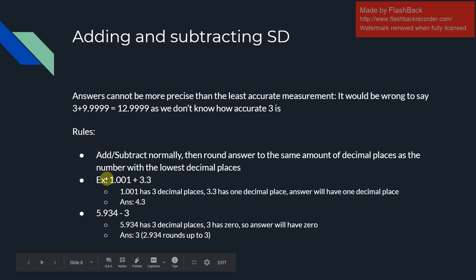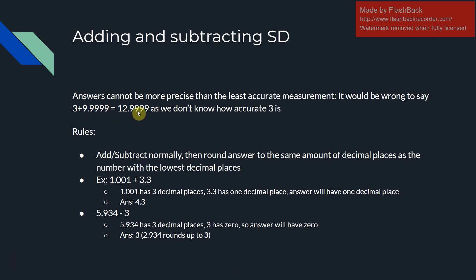When adding and subtracting significant digits, the answer cannot be more precise than the least accurate measurement. The rules are: add or subtract the numbers normally, then round the answer to the same number of decimal places as the number with the lowest decimal places. For example, 1.001 plus 3.3 — 1.001 has three decimal places but 3.3 only has one, so the answer is only going to have one decimal place.